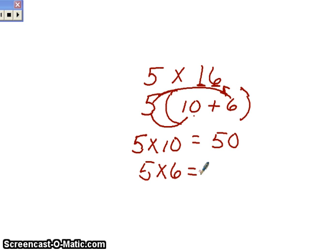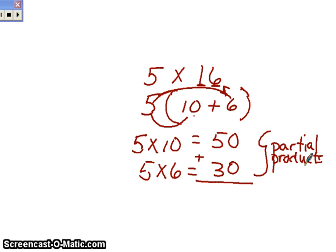And then we multiply the 5 by the 6 and get 30. And then what we do is we add those two together. And what those two numbers are called are partial products. They're part of the total product. And then when we add them together, we will get the total product of 80. So that's basically how the distributive property works.